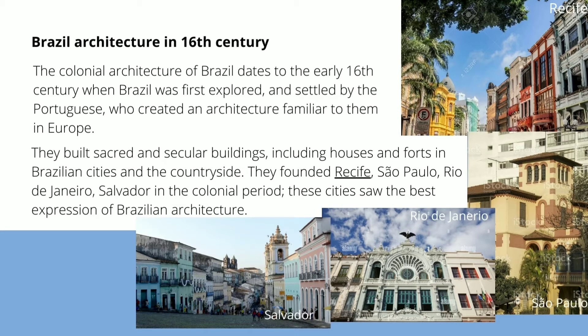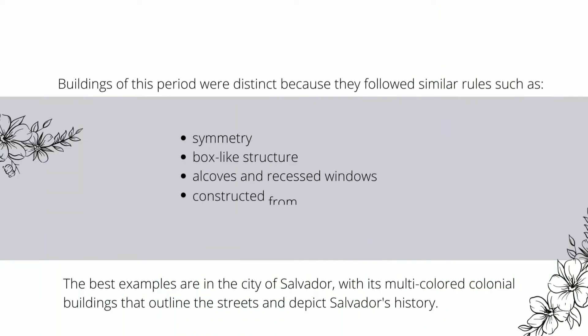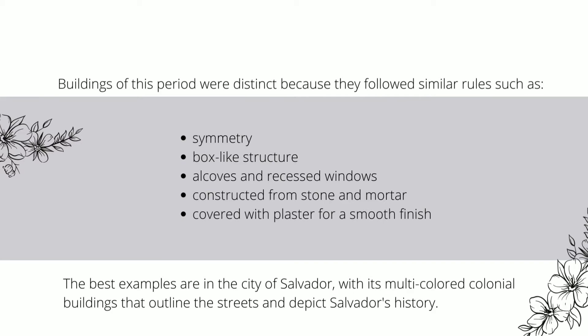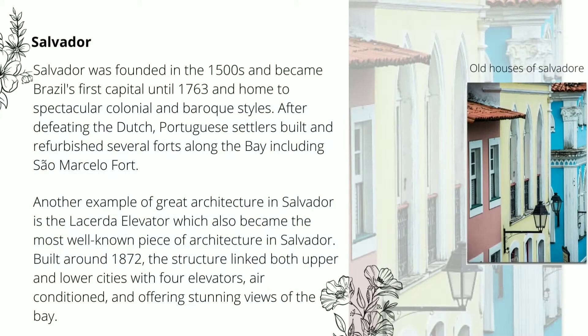They founded Recife, São Paulo, Rio de Janeiro, and Salvador in the colonial period. These cities saw the best expression of Brazilian architecture. Buildings of this period were distinct because they followed similar rules such as symmetry, box-like structure, alcoves, and recessed windows constructed from stone and mortar covered with plaster. The best examples are in the city of Salvador, with its multi-coloured colonial buildings. Salvador was founded in the 1500s and became Brazil's first capital until 1763, home to spectacular colonial and Baroque styles.